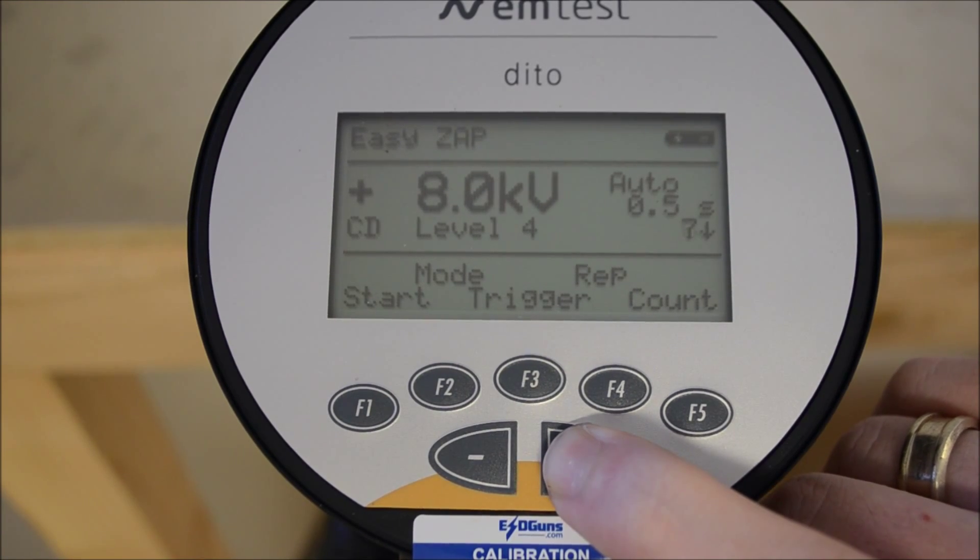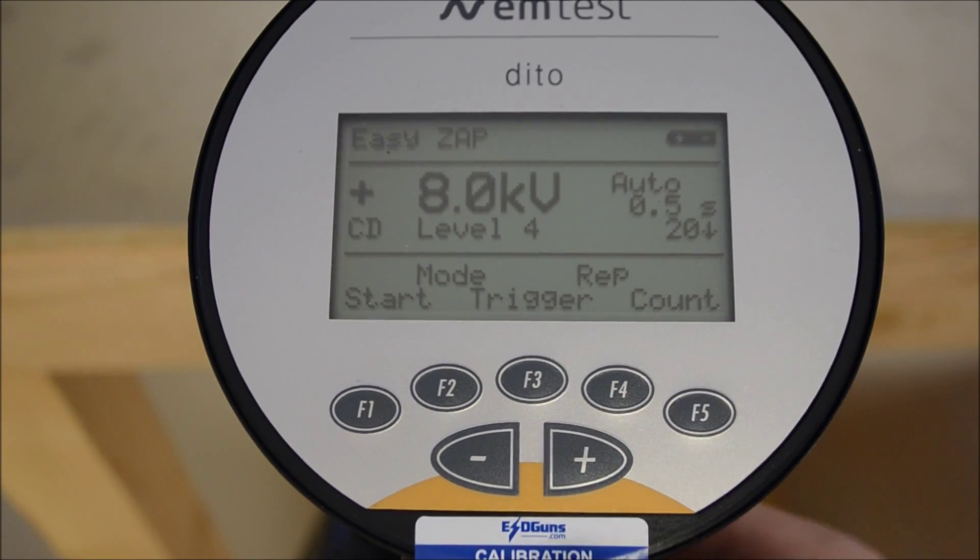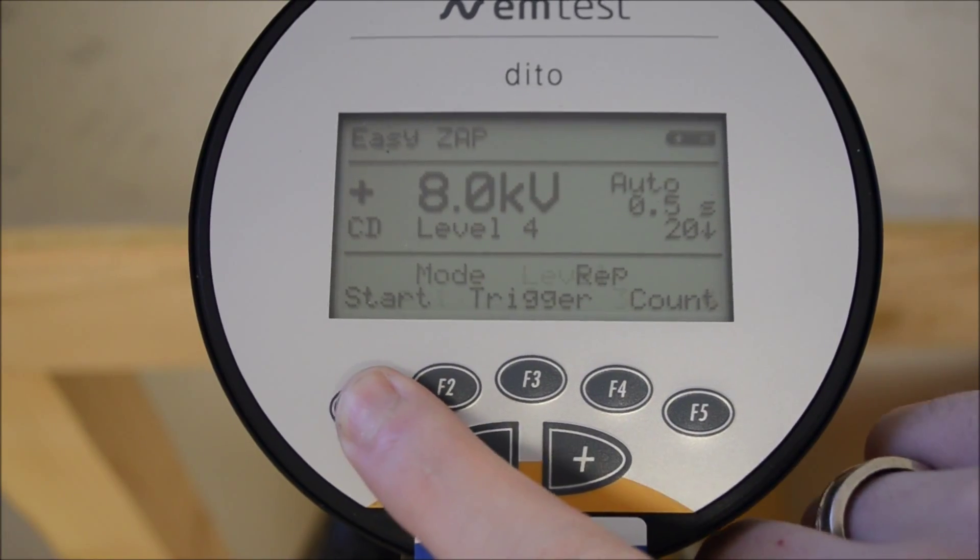A preset counter is available by pressing F5. Holding the plus button will increase by 10 after 10 increments. Pressing the trigger will save our counter to 20 pulses.